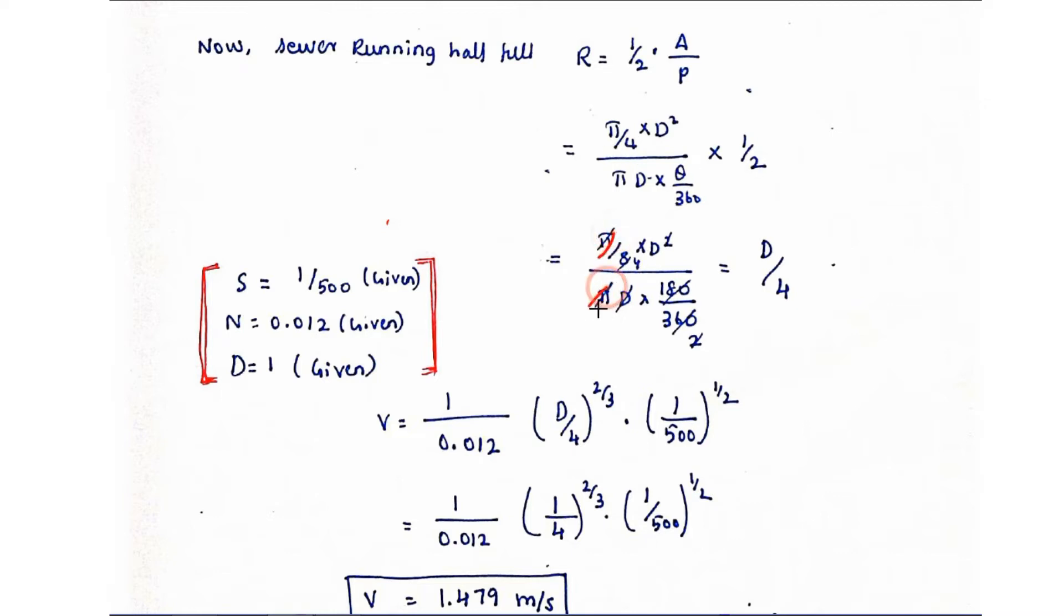The pi will be cancelled and d, d square d will be cancelled and theta is equal to 180. So 180 divided by 360 is equal to 2. So 2 and 8 will be cancelled and remaining is 4. Now we got the value d by 4, so r equals d by 4.